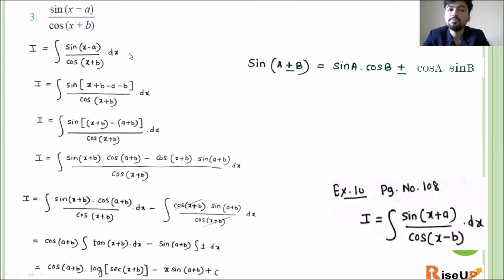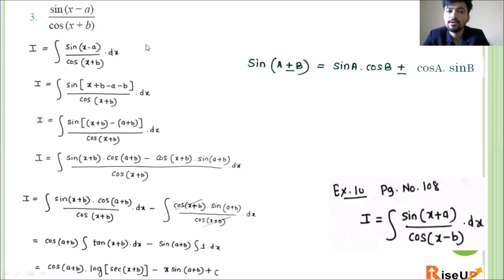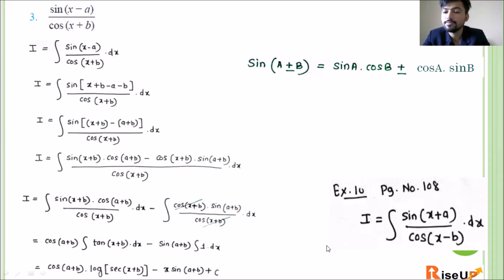I hope it is clear. Note that a similar example, example 10, is on page number 108, with a slight difference: sin(x+a) upon cos(x minus b). There the signs differ — one has plus and the other minus. You can solve it and cross-check your answer by looking at the solution on page 108.